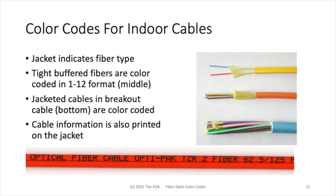Here are three examples of premises cables that are color-coded. On the top, yellow indicates single mode, and the two tight-buffered fibers are color-coded aqua and orange inside the cable, which was the choice of the manufacturer. The second cable is a distribution cable, and the tight-buffered fibers are color-coded in the standard 1 to 12 color-code format. The third cable on the bottom is a breakout cable, and each of the individual cables inside the breakout cable are color-coded, but in this case they don't follow normal color codes because there is a purple, a pink, and a lime green cable. That's the choice of the manufacturer and or the customer.